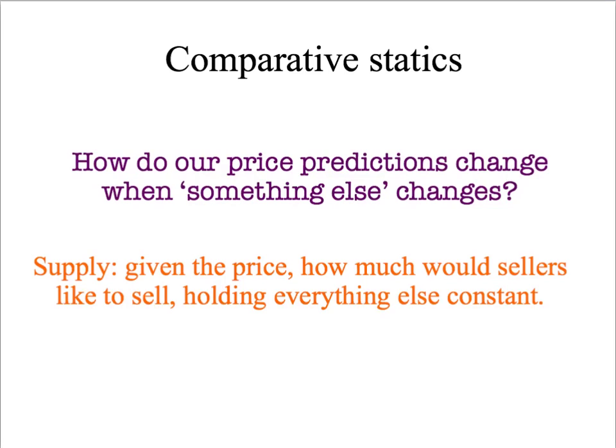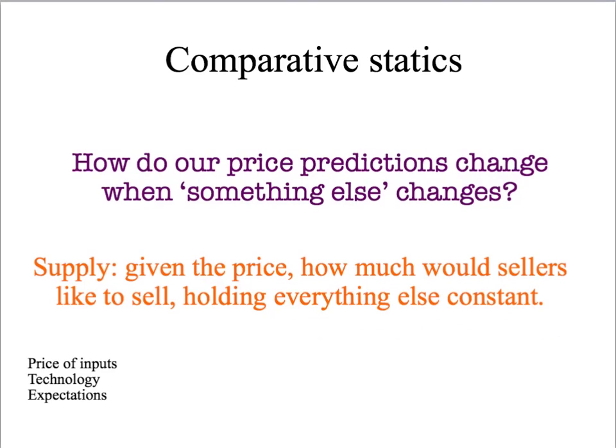Just to remind you of the definition, a supply curve answers the question: given the price, how much would sellers like to sell, holding everything else constant? When we drew our supply curve, we held fixed the price of the inputs that the sellers used, the technology that the sellers had access to, and the expectations that were held by the sellers. If we change any of these three things, that's going to shift the supply curve.